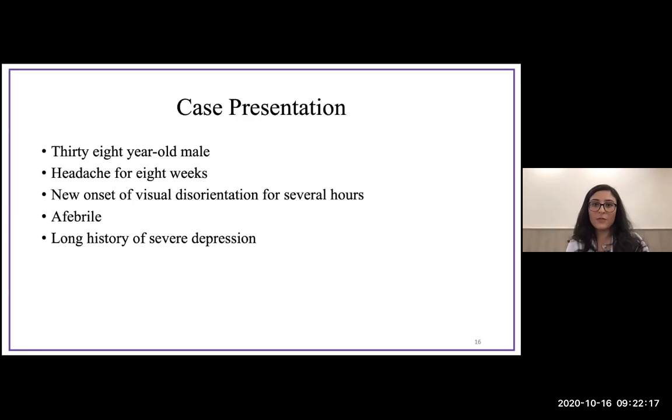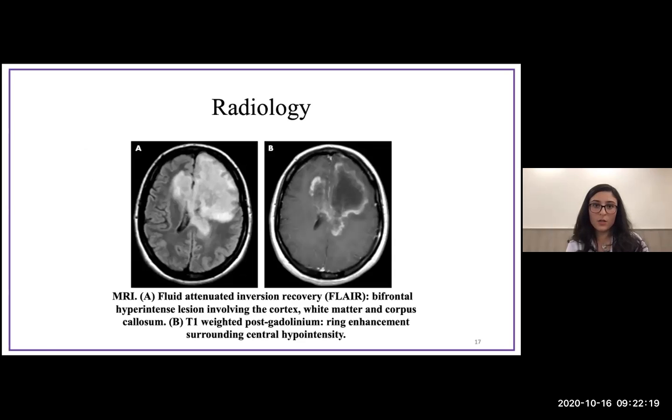The patient was sent for imaging. On MRI, it involved the cortex surprisingly—although we know MS usually involves white matter—and it also involved the white matter and corpus callosum. There was a ring-enhancing lesion when imaged using gadolinium.